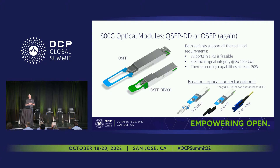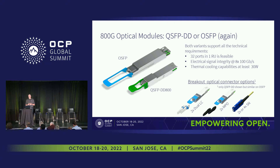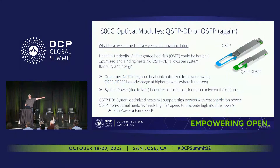As we look forward to 800 gig, we talk about two by duplex LC that's solvable with the Type 2B form factor that's standardized. There's proven electrical signal integrity at 8×106.25 gig, and thermal cooling capacity — we've proven we can cool at least 30 watts with the sliding dry contact that's part of the QSFP-DD form factor. There's obviously a large debate here, but we can take that out in the hall.